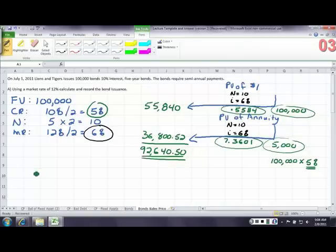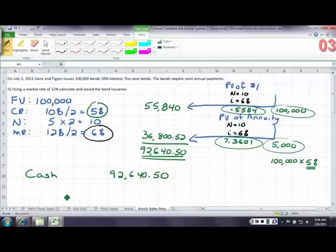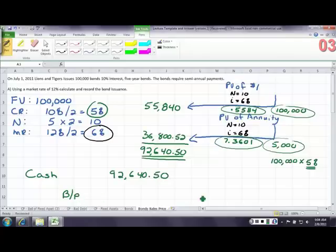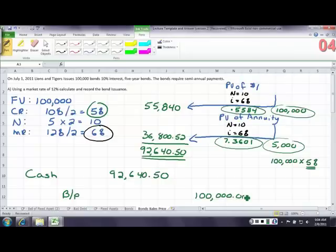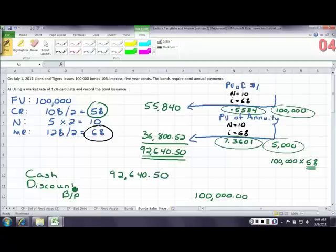So to record the bond issuance, we're going to debit cash for the amount of 92,640.50, or you could round. You're gonna record the bond payable at the face value. We always record the bond payable at the face value. The difference between the two is going to be a discount, because we received less than the face value of the bond. And we're gonna have a discount of 7,359.50. That's because we're paying less than the market, so we receive less for the bond.